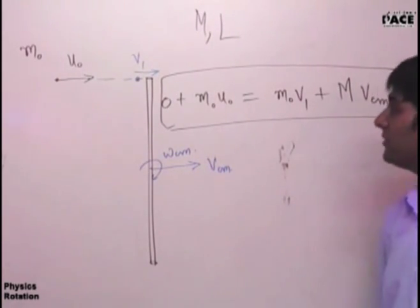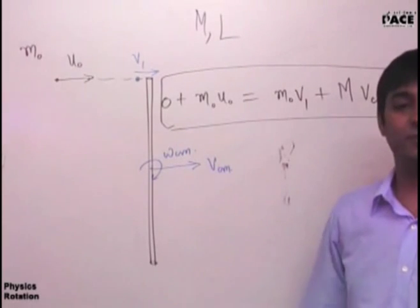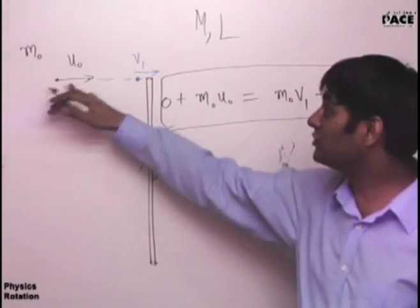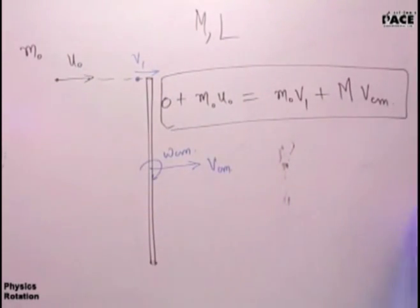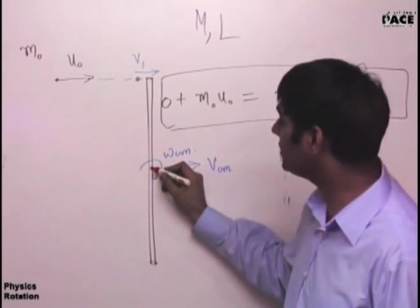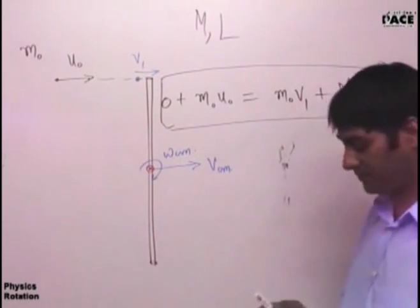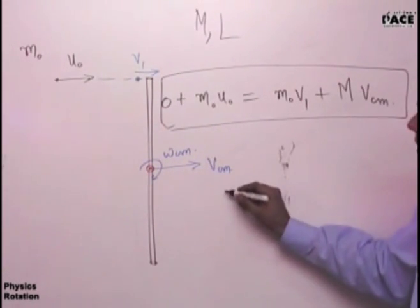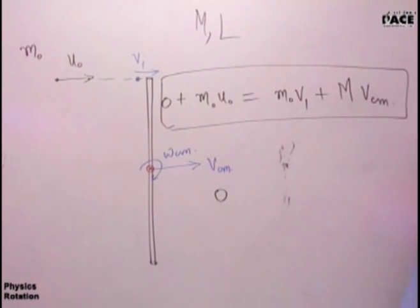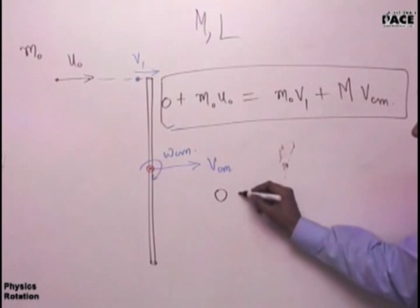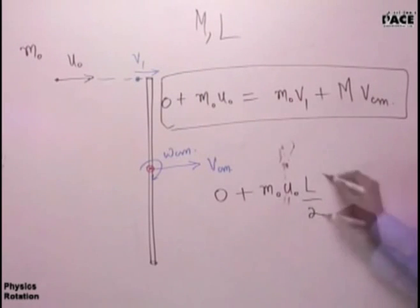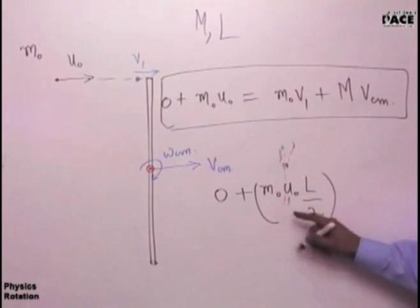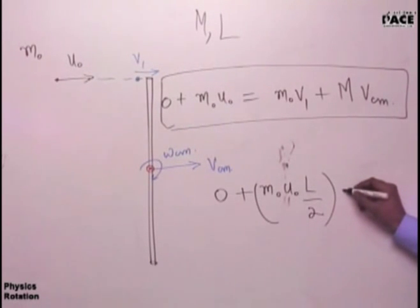Second is angular momentum conservation. We can conserve angular momentum about any point in space because external torque acting on the system is 0. These two bodies when they collide, they exert a force on each other. That force is an internal force. External force is 0. Therefore, I can conserve angular momentum. I am going to conserve angular momentum about a point which is coinciding with the center of mass of the rod. So angular momentum conservation gives me - initially angular momentum of the rod is 0 because there is no spin and there is no translation. Angular momentum of the point mass initially is M not U not into L by 2. This is clockwise. Now angular momentum is the total angular momentum of the system initially before collision.